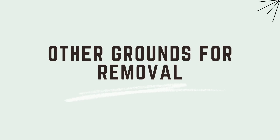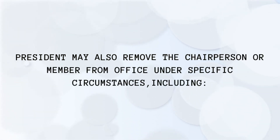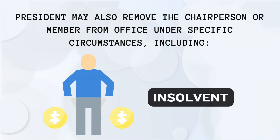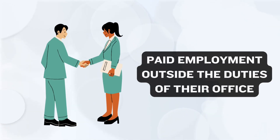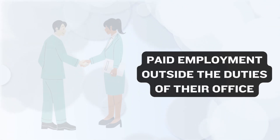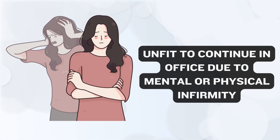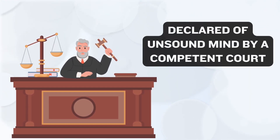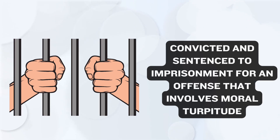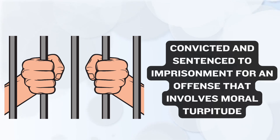The President may also remove the chairperson or any member under specific circumstances, including: if the individual is adjudged an insolvent; engages in paid employment outside the duties of their office; is unfit to continue in office due to mental or physical infirmity; is declared of unsound mind by a competent court; or is convicted and sentenced to imprisonment for an offence involving moral turpitude, in the opinion of the President.